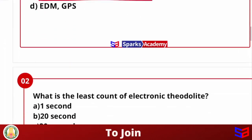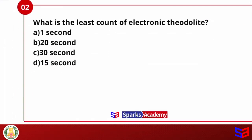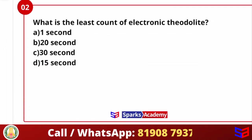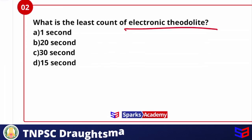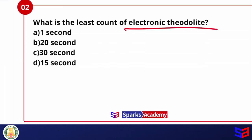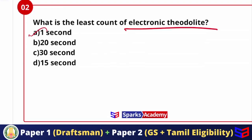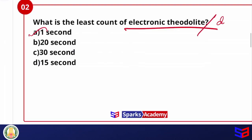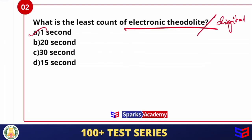So now we have to understand what the correct option is. Theodolite compass is not correct, theodolite EDM is not correct — electronic theodolite plus EDM is the correct answer. Next question: what is the least count of an electronic theodolite? With an electronic theodolite, we can measure up to 1 second.